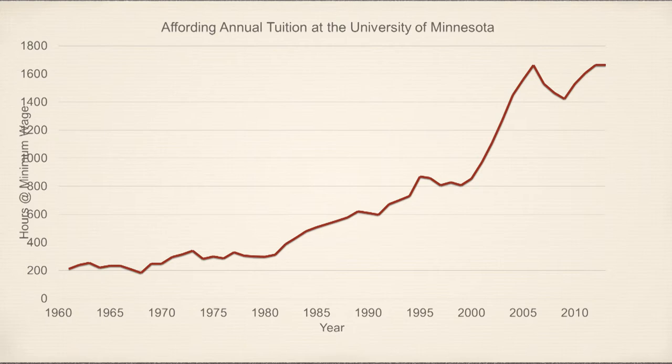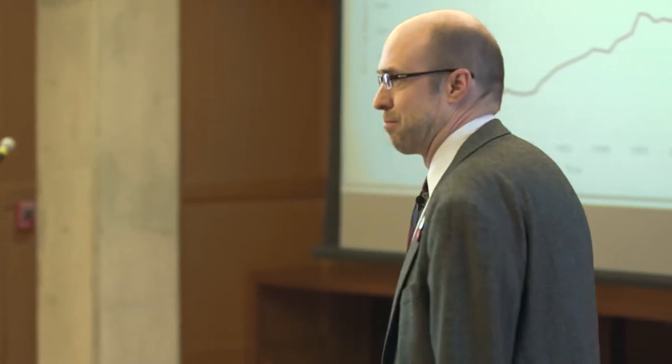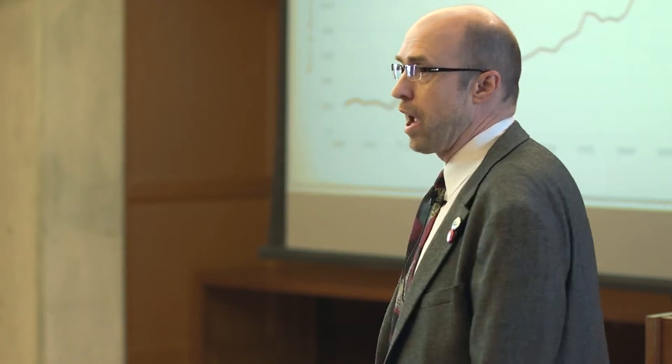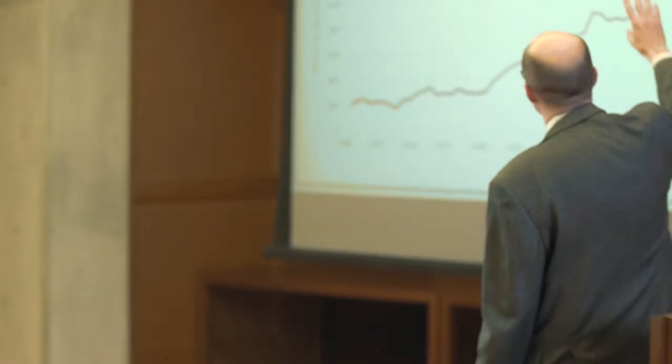This is the number of hours a student would have to work at a minimum wage job to afford one year of tuition at the University of Minnesota. Back in 1960, when my dad was a student at Ohio State — I was born in Columbus because of that — they could work about 200 hours to afford tuition. That's just tuition, not room and board or books. About 200 hours: that's a summer job. You could do that in the summer to pay the tuition for the year. Now today it's more like 1,700 hours, which is getting pretty close to a full-time job all year round.